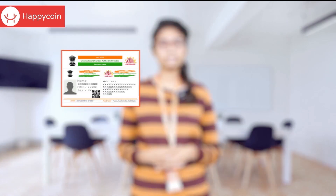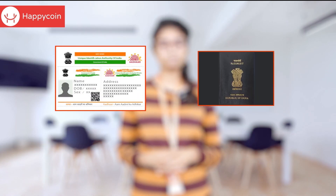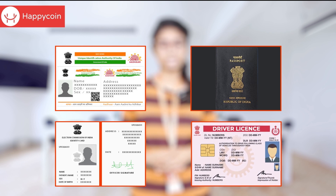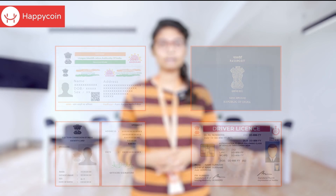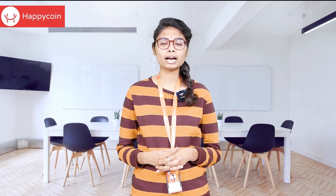Some of the Officially Valid Documents are as follows: Aadhaar card, passport, voter ID, and driving license. Please note that PAN was not mentioned in this list until April 2018.